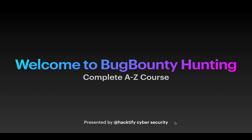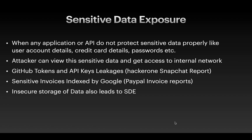Let's continue to the third vulnerability of OWASP: Sensitive Data Exposure (SDE). SDE occurs when any application or API does not properly protect sensitive data — for example, user account details, credit card details, or passwords. This vulnerability arises when an attacker can view this sensitive data and gain access to the internal network.